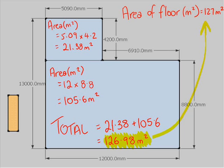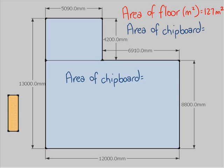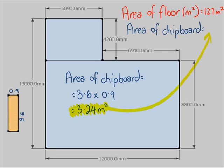Now the next thing we're going to have to look at is the area of the chipboard itself. The chipboard measures 3.6 metres by 0.9 metres. 3.6 by 0.9 gives us an answer of 3.24, which we'll put just under our little thing where I wrote how big the floor was. So the floor is 127 and the area of the chipboard is 3.24 metres squared.